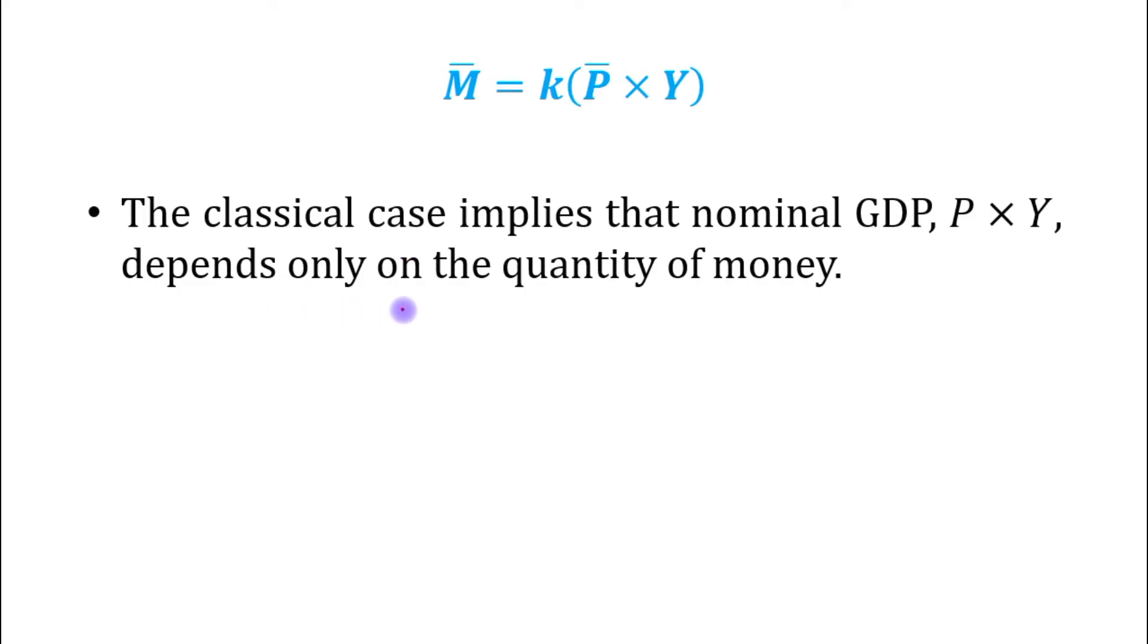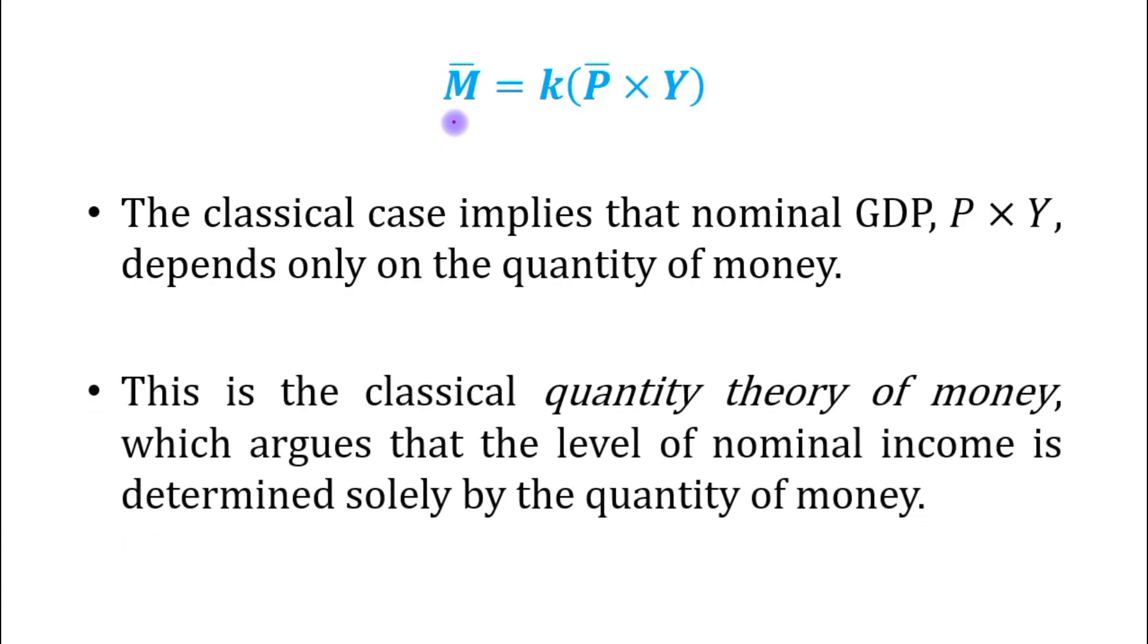Nominal GDP depends only on the quantity of money, that is M bar. This is the classical quantity theory of money, which argues that the level of nominal income or nominal GDP is determined solely by the quantity of money.